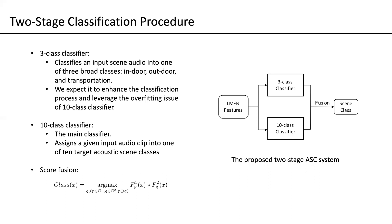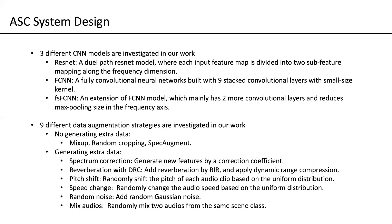In the fusion equation, F1 is the three-class classifier output and F2 is the ten-class classifier output. For example, a bus scene belongs to the transportation class, so the probability of an input audio being from the bus equals the product of the probability of bus and the probability of transportation. Besides the two-stage classification procedure, we also investigated three different CNN models: a ResNet model (residual network), an FCN model (fully convolutional network), and an FS-FCN model (frequency subsampling fully convolutional network).